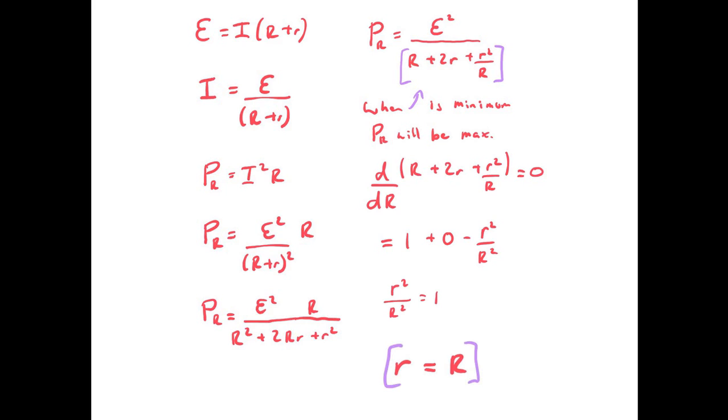Rearranging and I get r = R. So for our maximum power out from our circuit, when the external resistance is equal to the internal resistance, I will get maximum power transfer.